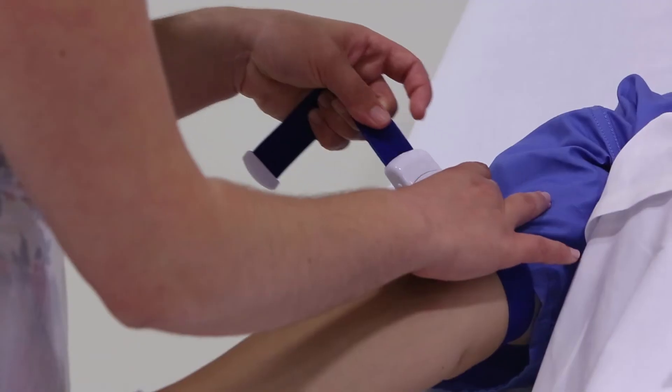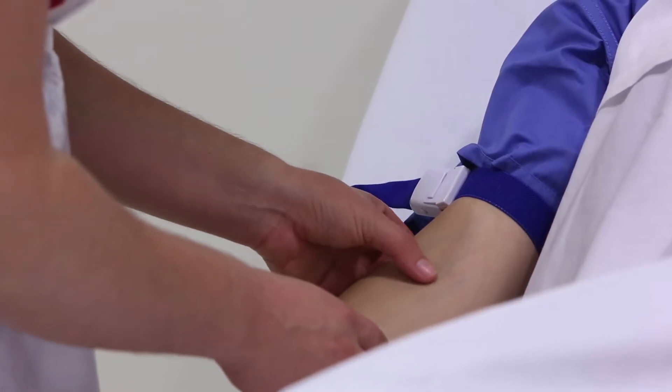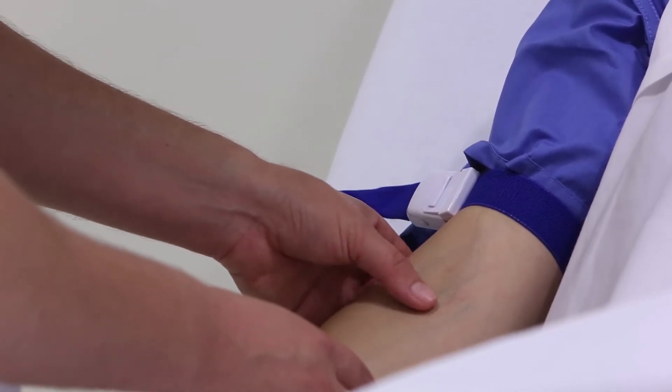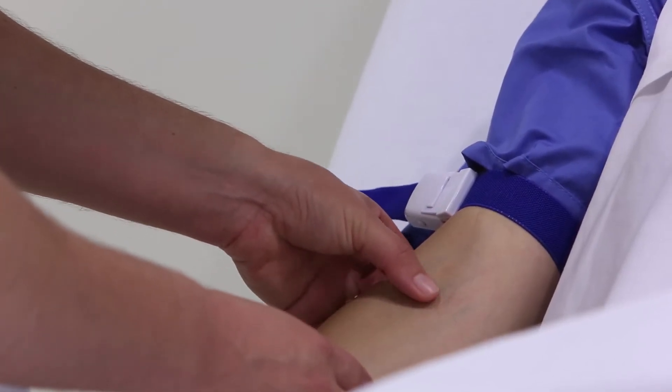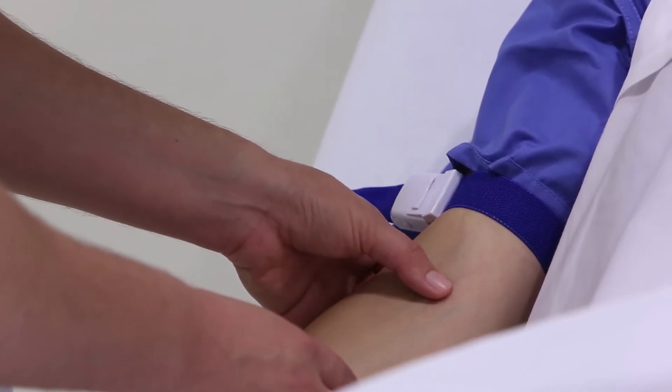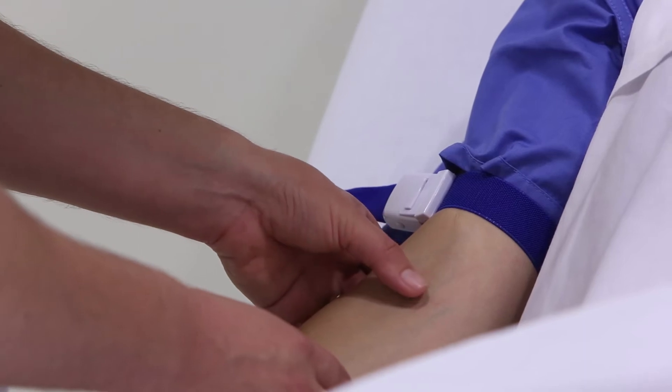Apply the tourniquet and select the venipuncture site, ideally choosing the hand veins or veins of the antecubital fossa, leaving the femoral veins as a last resort due to a higher risk of contamination when sampling from the latter. Do not use existing cannulas or sites above them.